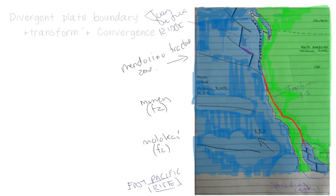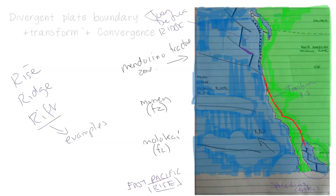I hope you enjoyed this video on the difference between the rise, the ridge, and of course the rift valley, which we will get into in more detail with different examples. We'll also look at how the ridge and the rise lead into convergent plate boundaries, subduction, the Ring of Fire, and different areas around the world. Thanks for listening!